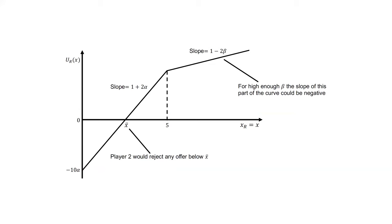This diagram shows the responder's utility curve as a function of the offer X. Player 2 would reject any offer below amount X-bar. The slope of the curve below 5 is 1 plus 2·alpha, and above 5 — where the responder is getting more than the proposer — the slope is 1 minus 2·beta. For high enough beta, the slope of that part of the curve could be negative.